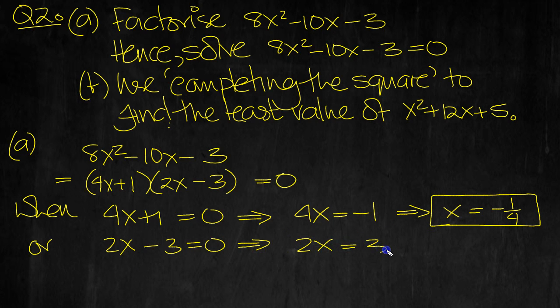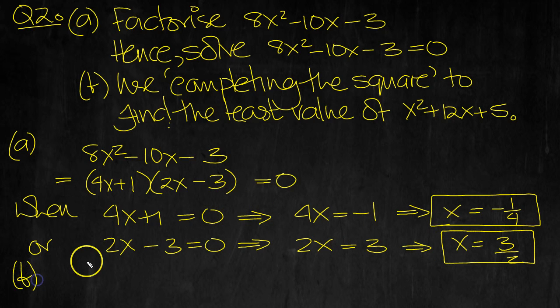Move the minus 3 over to plus 3. And then move the 2 from times down to divide. 3 over 2 is the other value. OK, that's part A. Now part B.